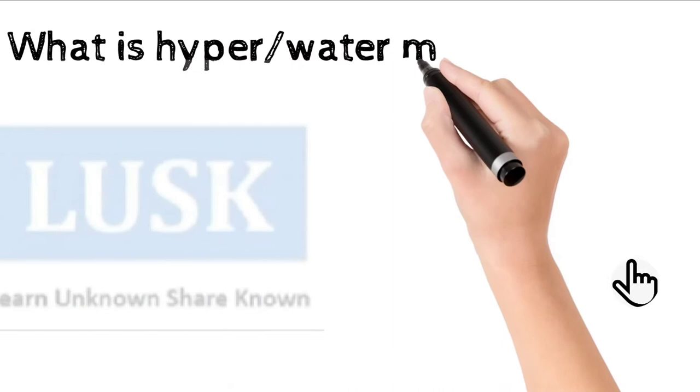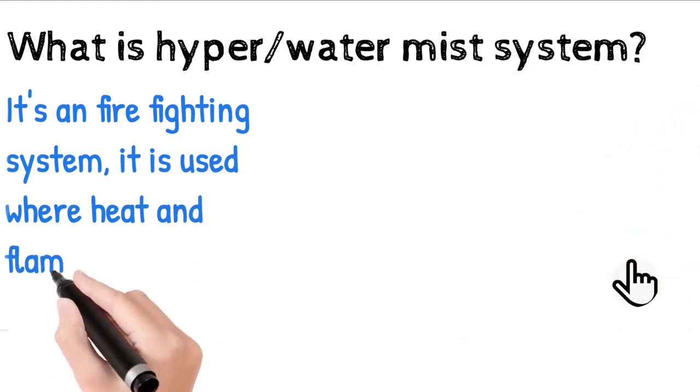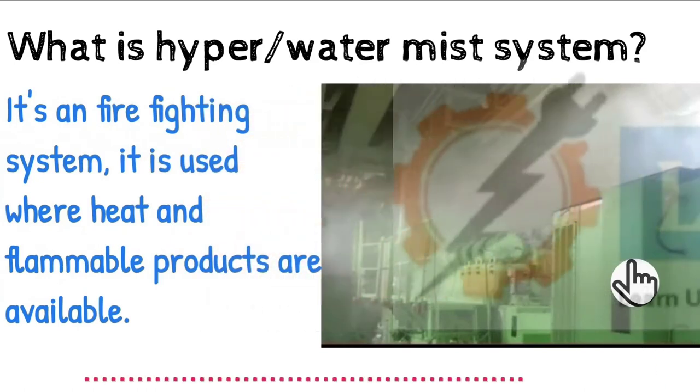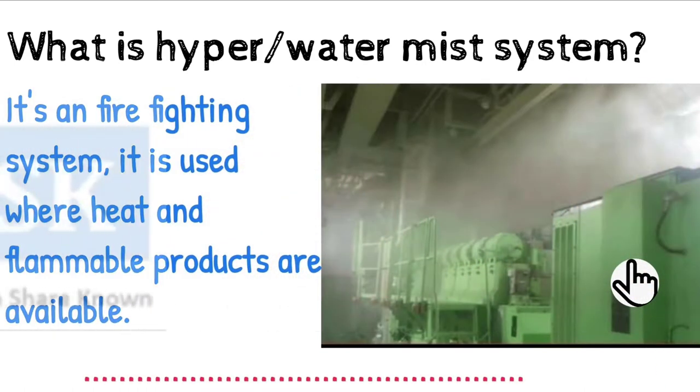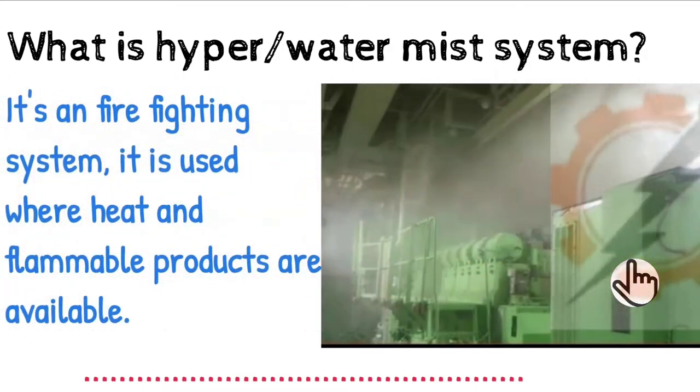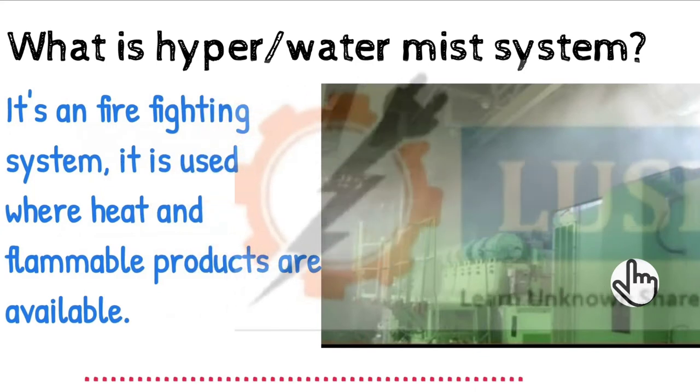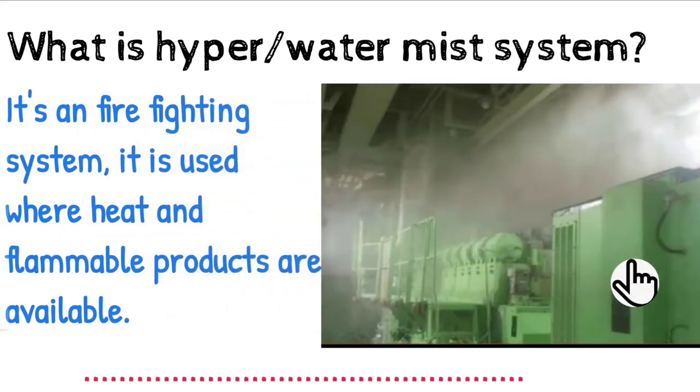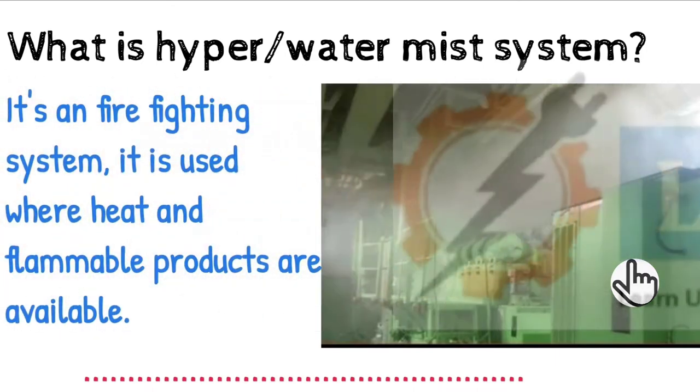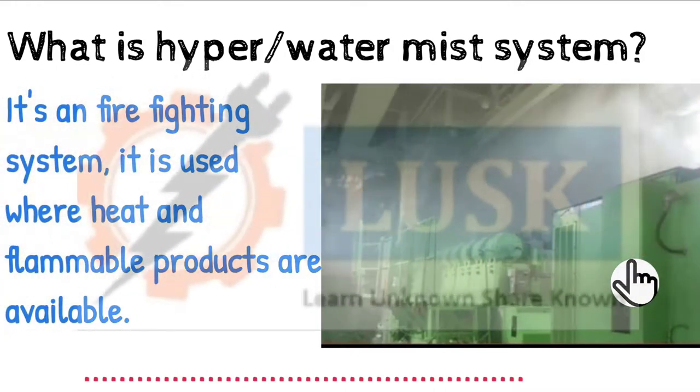First we know what is hypermist system. Hypermist system is otherwise called watermist system. It is a firefighting system used where heat and flammable products are available, like a generator. In a generator, the engine will be very hot, and there are chances of oil leakages on top of hot surfaces. So there is a chance of fire, so we need a firefighting system which will activate automatically. We are using hypermist system where heat and flammable products are available in ship.